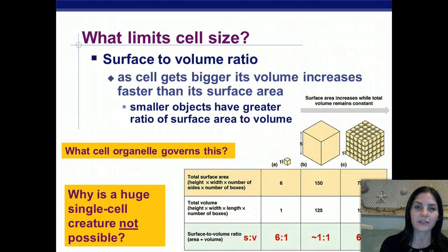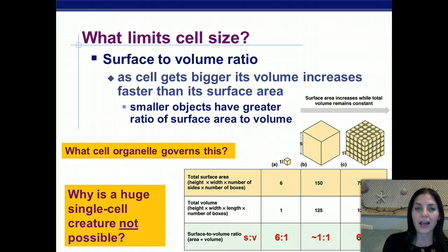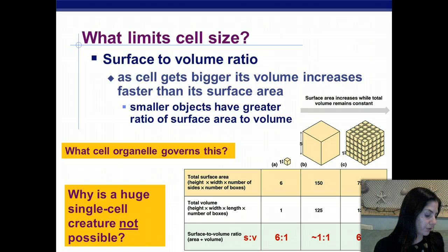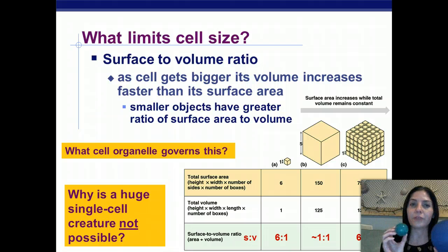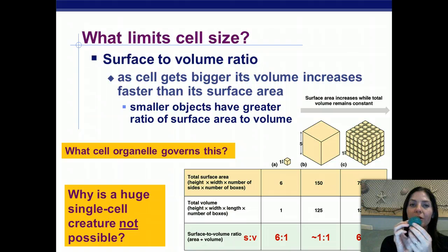What limits cell size? It's the surface area to volume ratio. As a cell gets bigger, its volume increases much faster than its surface area. Smaller objects have a greater ratio of surface area to volume, which is what we want. This allows materials to get into and out of the cell at a much quicker rate. Things will diffuse to the center of a smaller sphere much faster than a larger one.